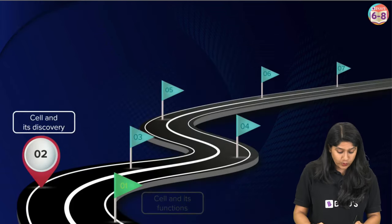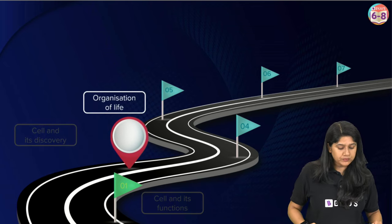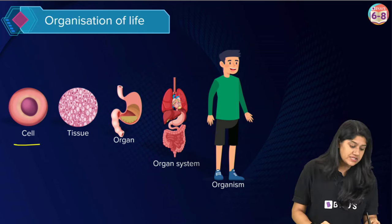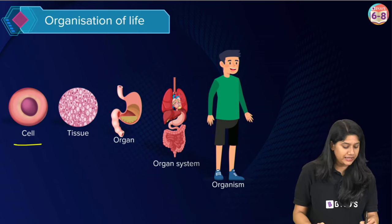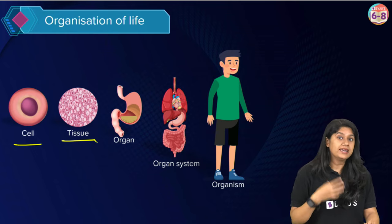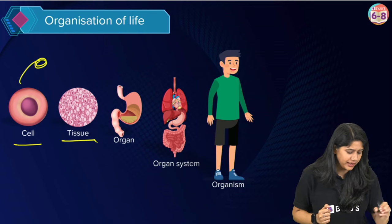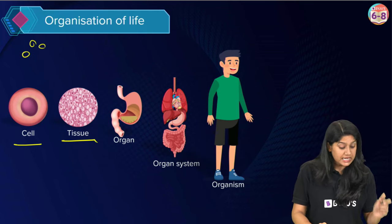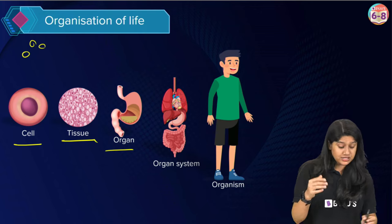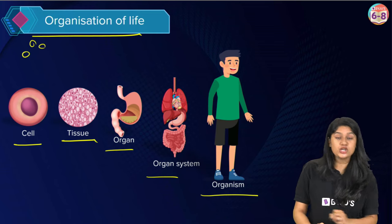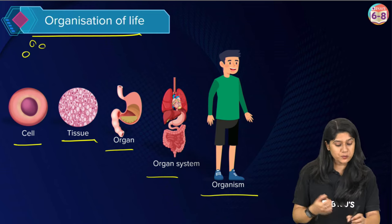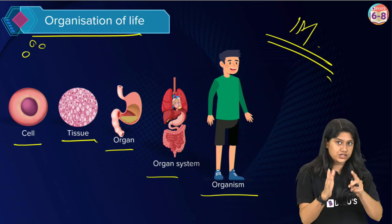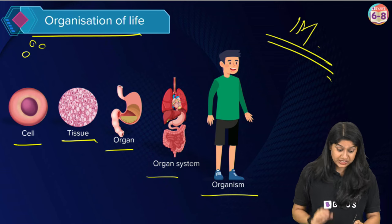Now we will discuss the organization of life. In multicellular organisms like us, cells come together to form tissues — cells of the same or different types forming tissues. These tissues form organs, organs form the organ system, and eventually we have the organism. This is the organization of life. It can come as a one-mark question, or fill in the blanks asking what comes after cell, tissue, and so on.